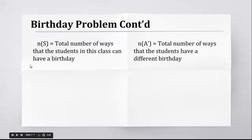We're going to do N of S is the total number of ways that the students in the class can have a birthday. So the total number of ways that that can happen. The total number of ways that days can be distributed amongst 26 people. But then N of A prime, we call it A prime because it's what we don't want. And so we just recognize that we're going to subtract that off at the end. But it's the total number of ways that the students have a different birthday. And that's a lot easier to think about than having at least two people sharing a birthday.